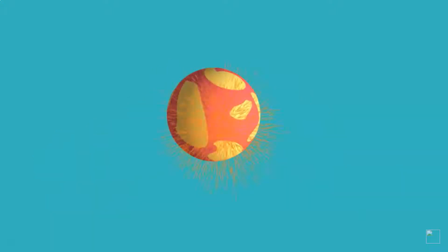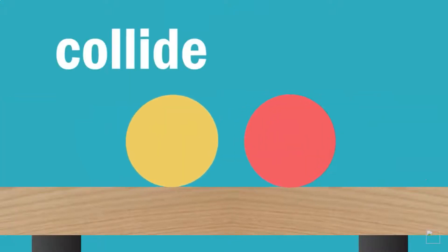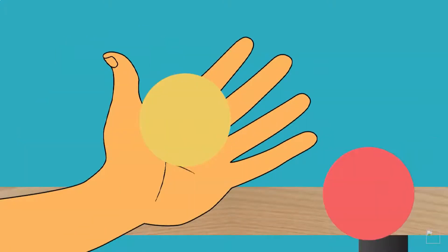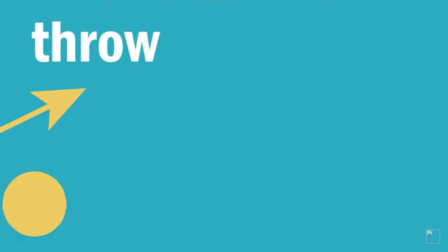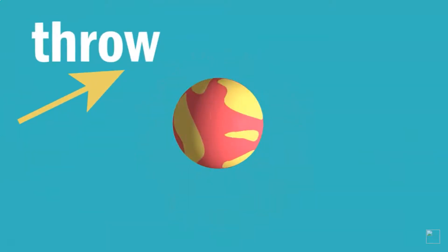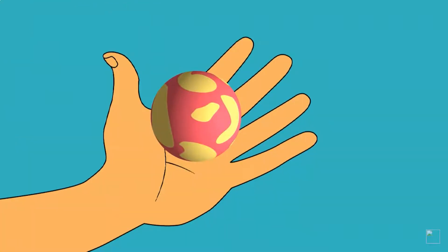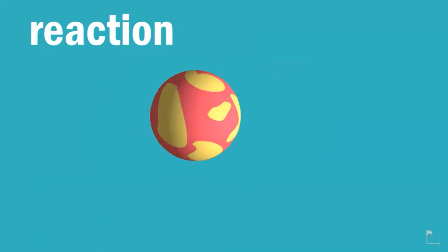Imagine our reaction being that of a ball of yellow plasticine reacting with a ball of red plasticine to give just one ball consisting of the yellow and red plasticine stuck together. If you slowly roll the ball of yellow plasticine towards the ball of red plasticine, they will collide. However, if you pick it up, the red ball will not be stuck to it.